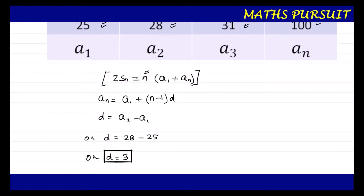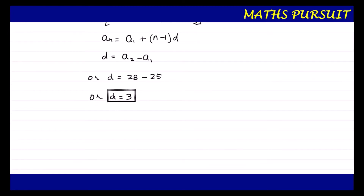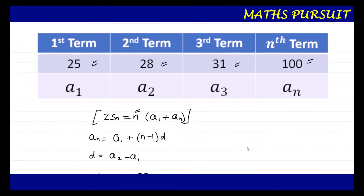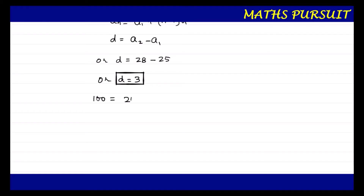Now let us use the value of d in the nth term formula. The value of an is 100 and the value of a1 is 25. Substituting: 100 = 25 + (n − 1) × 3, which gives 100 = 25 + 3n − 3, or 100 = 22 + 3n.